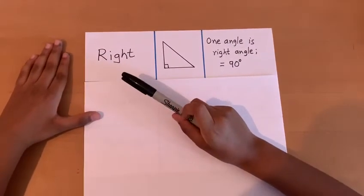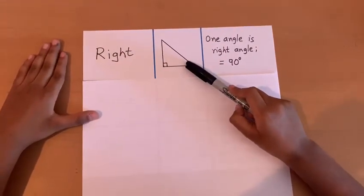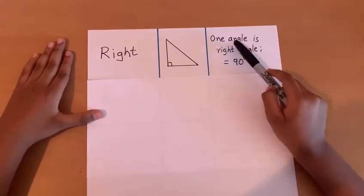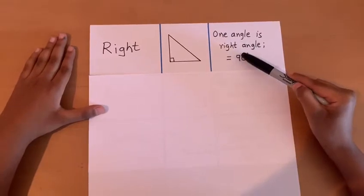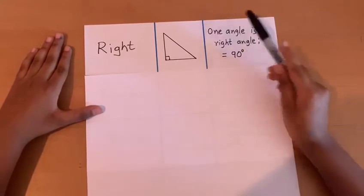Our first triangle is the right triangle. This is what a right triangle looks like. The factors that make up a right triangle are one angle is a right angle. A right angle is equal to 90 degrees. We can see that this angle here is a right angle.